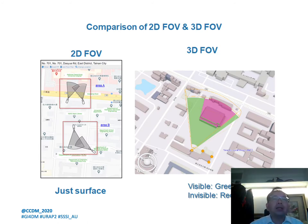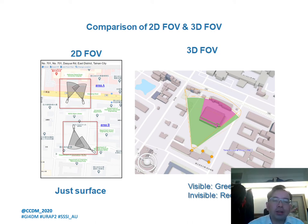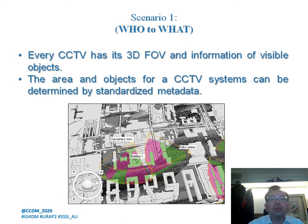Next is a comparison of 2D FOV and 3D FOV. The 2D FOV shows just a surface view, but from the 3D FOV we can see that visible areas are shown in green and invisible areas in red. In Scenario 1 — who does what — every CCTV has its 3D FOV and information about visible objects. The area and objects covered by the CCTV system can be determined using standardized metadata.